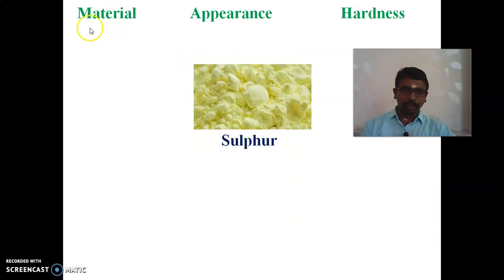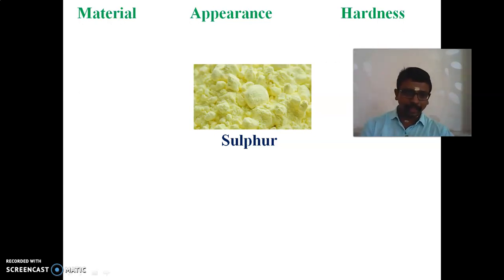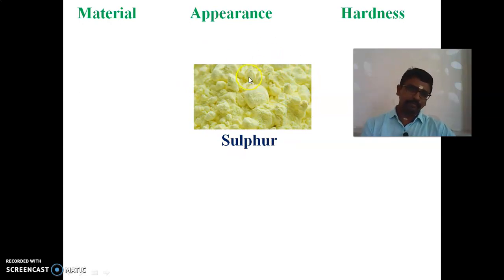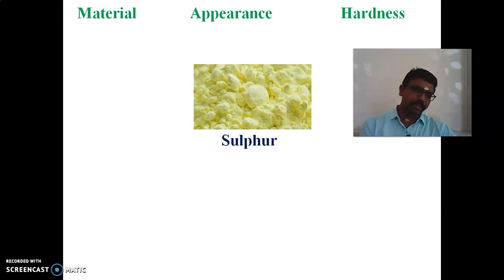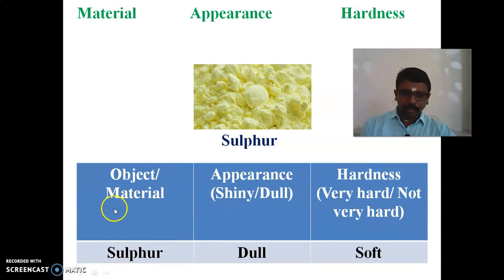The next material is sulphur. You can see the appearance — it is dull. And for hardness, it looks very soft and powdery — softness is there. So we can conclude: sulphur's appearance is dull and its hardness is soft.